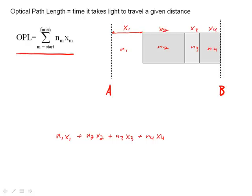What you see is the actual optical path length from A to B is equal to the sum of the distances times the indices of refraction. So for example, let's say n2 was very small and n3 was very large.